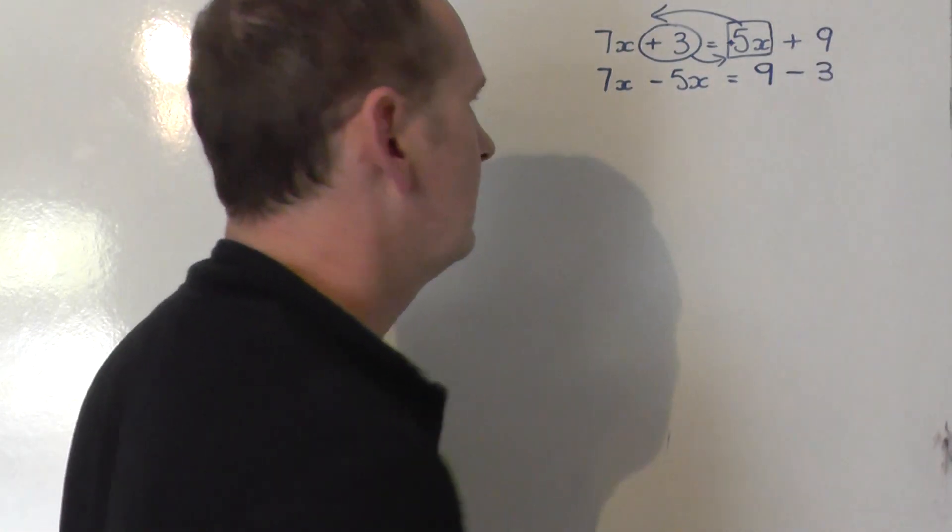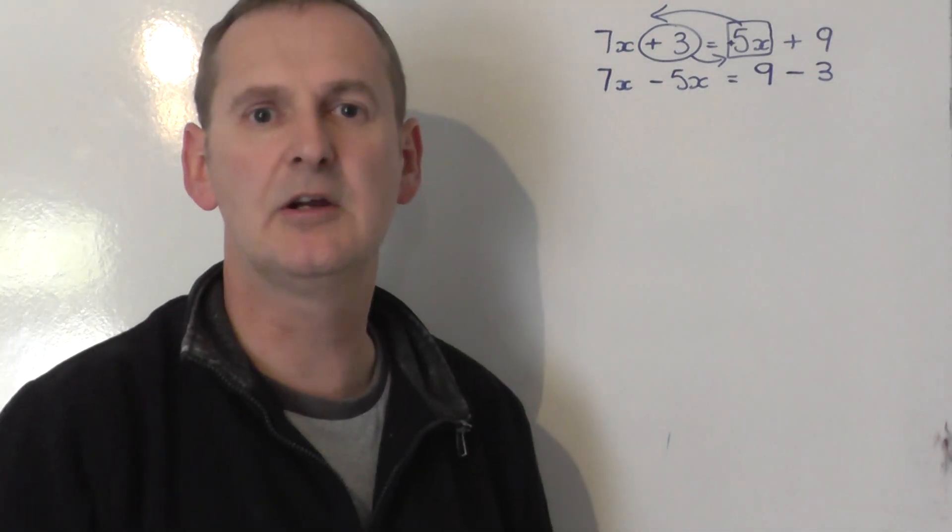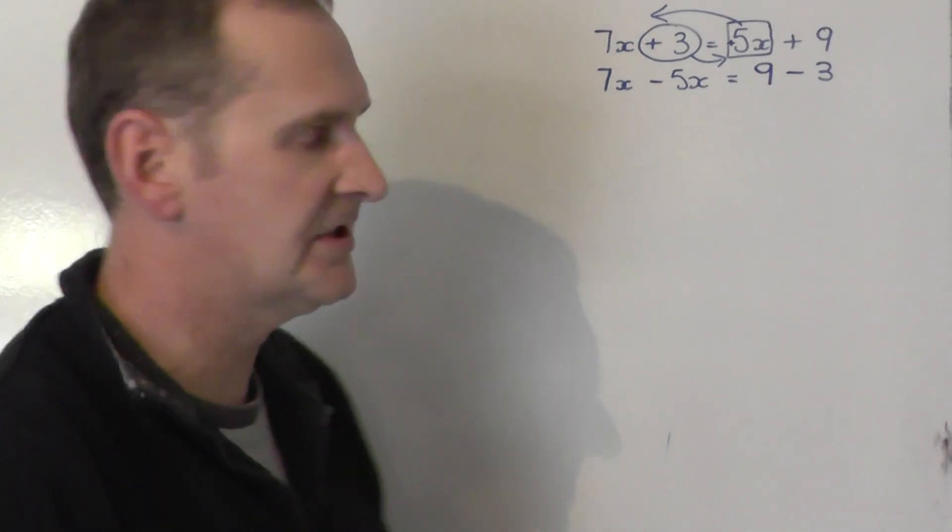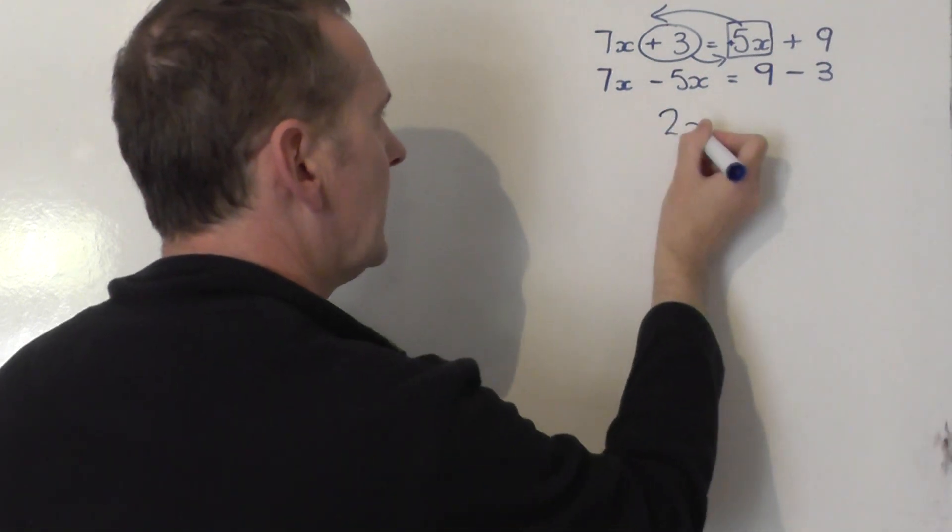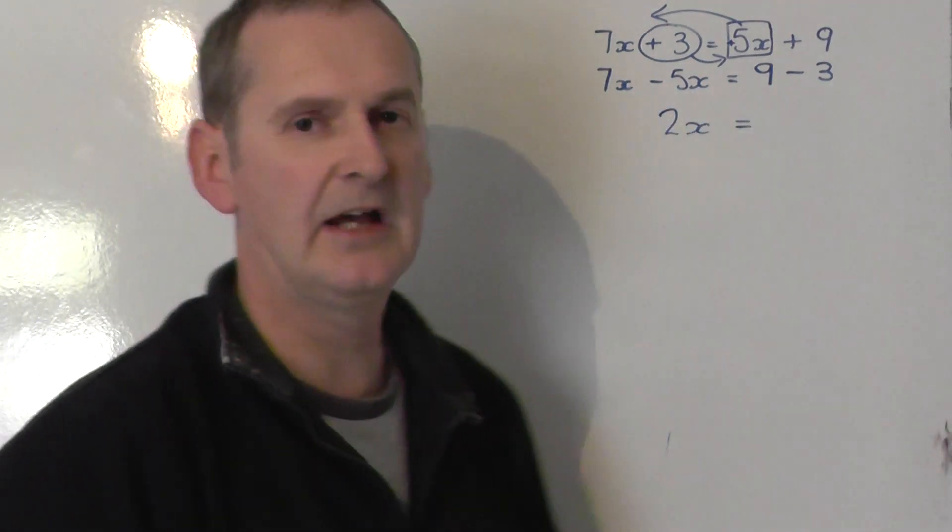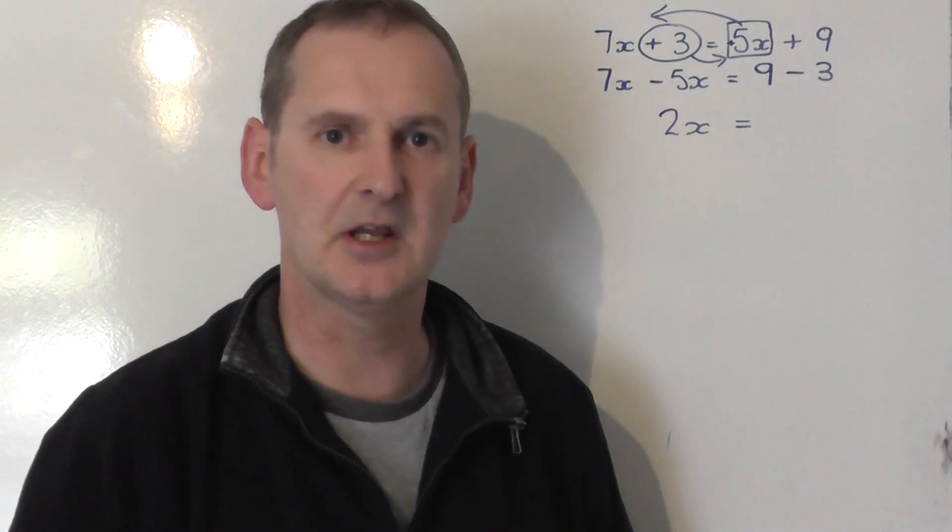So, you get 9 minus 3 on the right. We now tidy up. On the left-hand side, we've got 7x's take away 5x's. That's 2x's. And on the right-hand side, we have 9 take away 3. 9 take away 3 is 6.